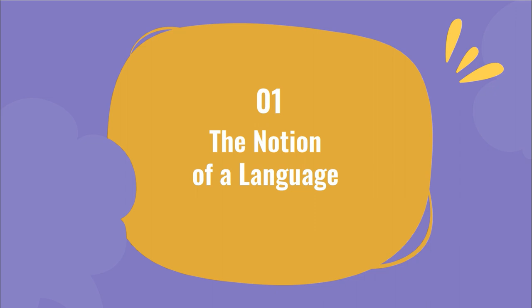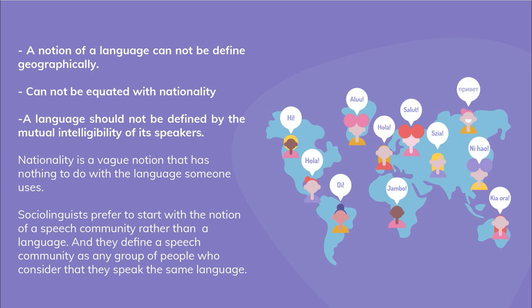Now let's move on to the first topic: the notion of a language. A notion of a language cannot be defined geographically, cannot be equated with nationality, and also a language should not be defined by the mutual intelligibility of its speakers. Nationality is a vague notion that has nothing to do with the language someone uses.